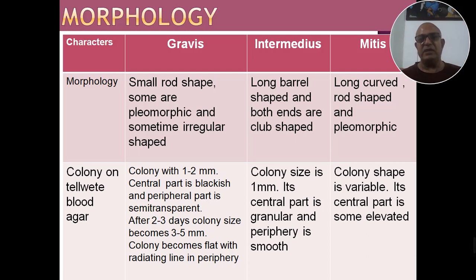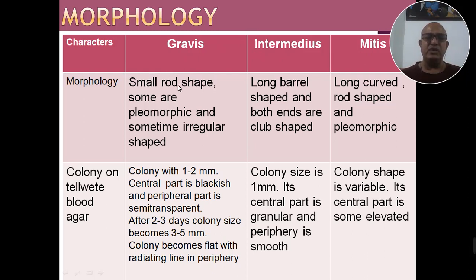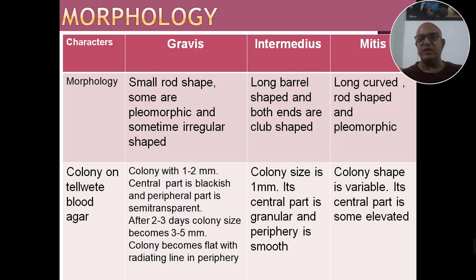Comparative account: Gravis form — small and rod-shaped, some are pleomorphic, and sometimes irregular in shape। Intermediate form — long and barrel-shaped; both ends are club-shaped। Mitis form — long और slightly curved, rod-shaped, and pleomorphic। यह morphological differences हैं इन तीनों प्रतिरूपों में।